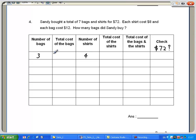Let's calculate the cost. 3 bags, each costing $12. That would be $36. 4 shirts, each costing $8. That would be $32.